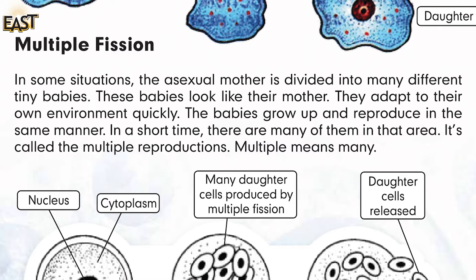These babies look like their mother. They adapt to their own environment quickly — repeat: they adapt to their own environment quickly. The babies grow up and reproduce in the same manner. In a short time there are many of them in that area.